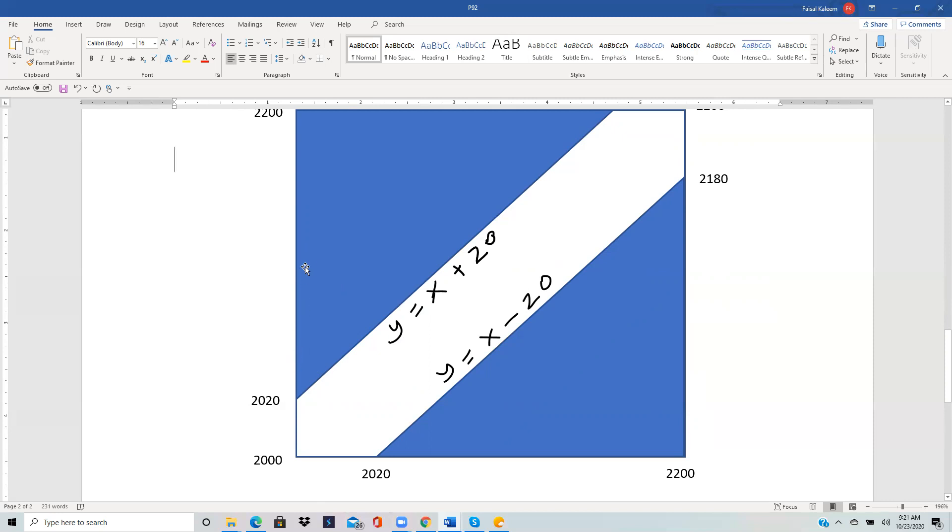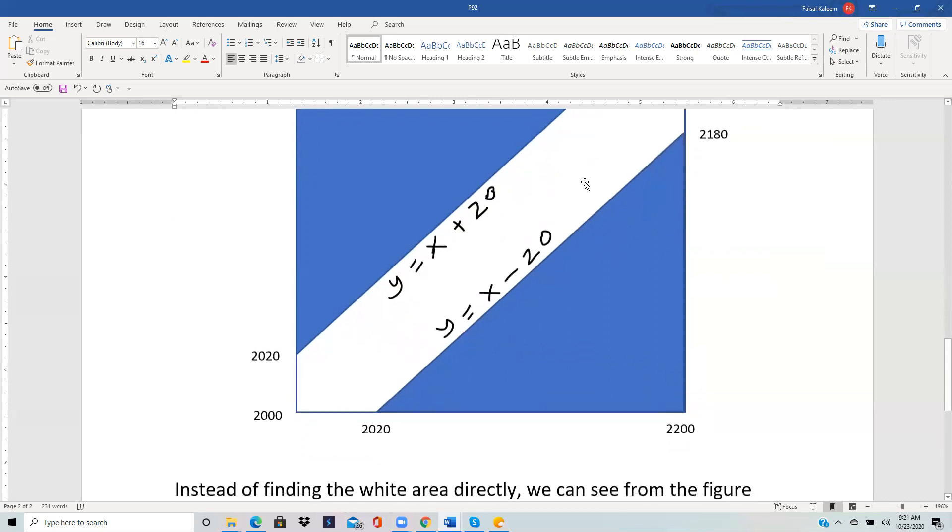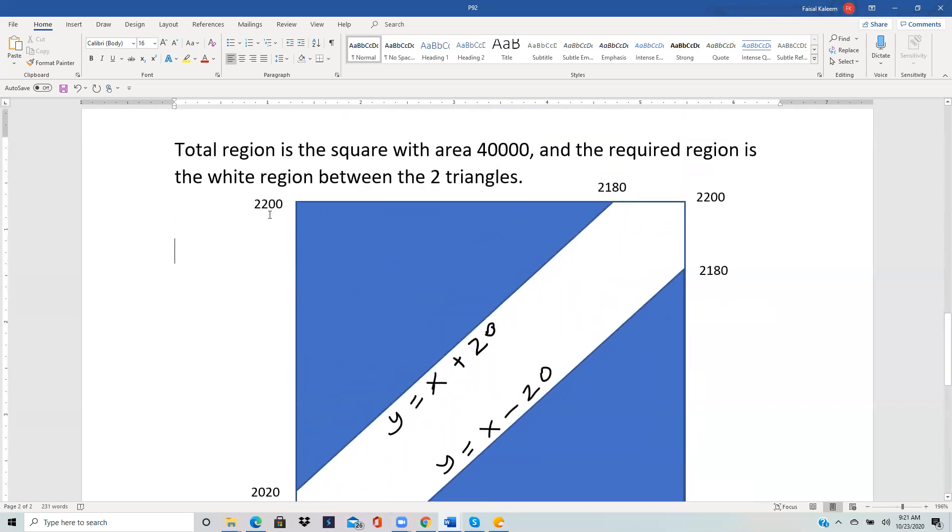For this triangle over here, you can see that this height is 2200 minus 2020, and that's 180. The base is 2200 minus 2000, so the X here is 2000. Let's write the whole point: 2000 for X and 2200 for Y over here.